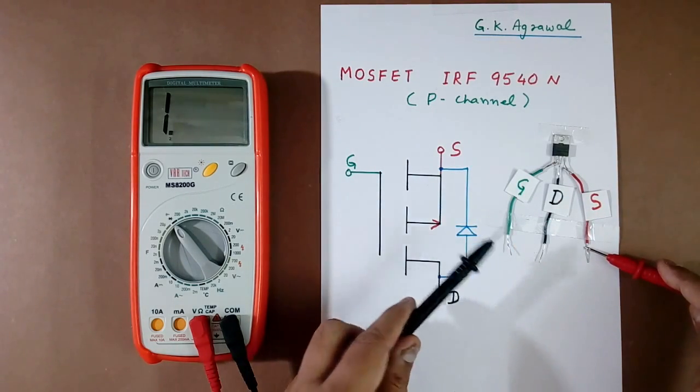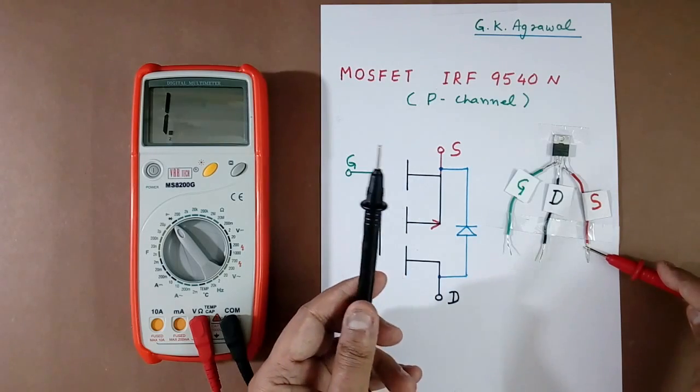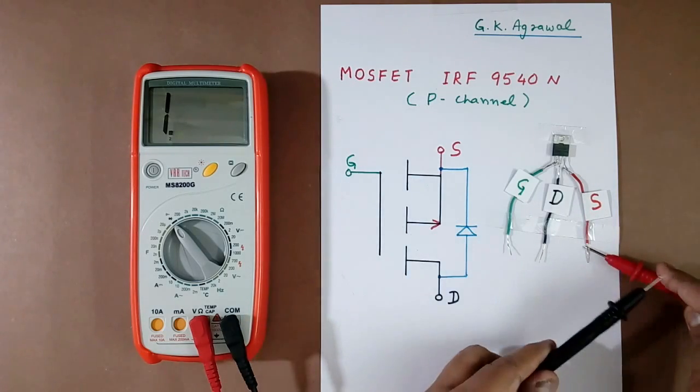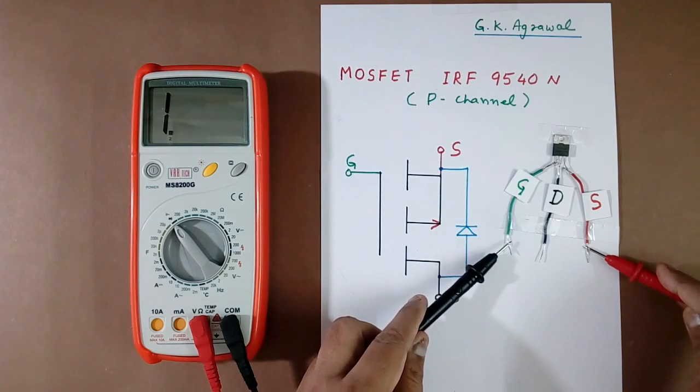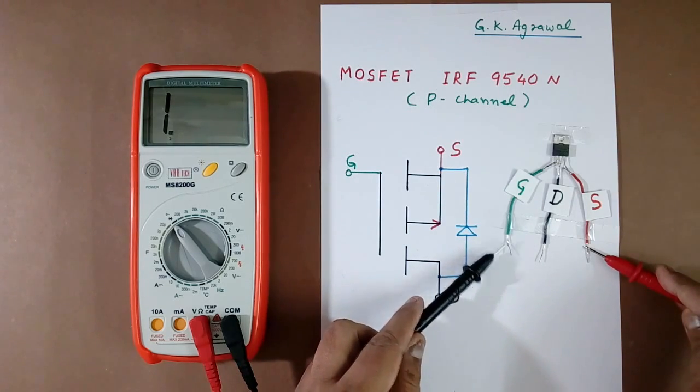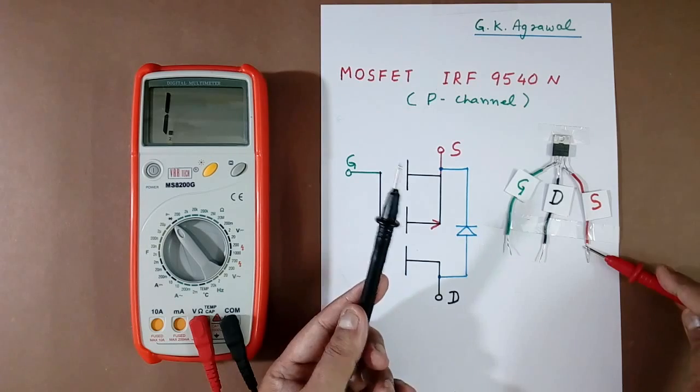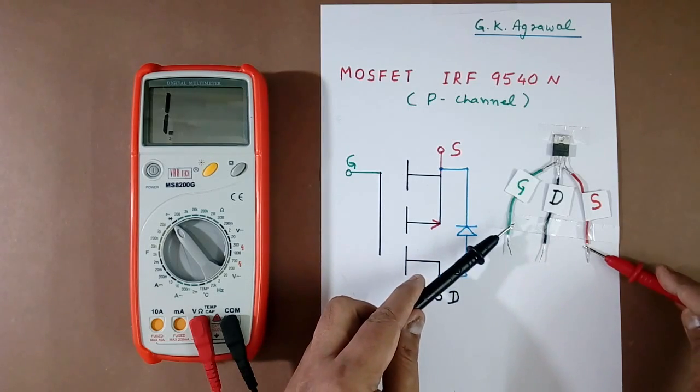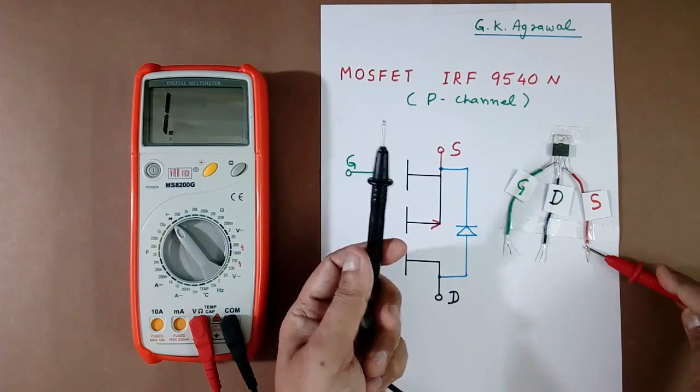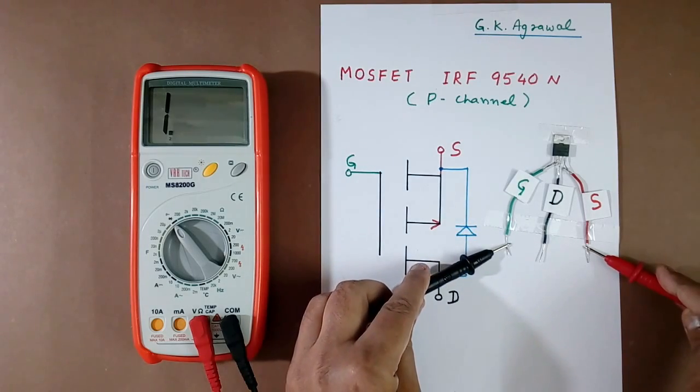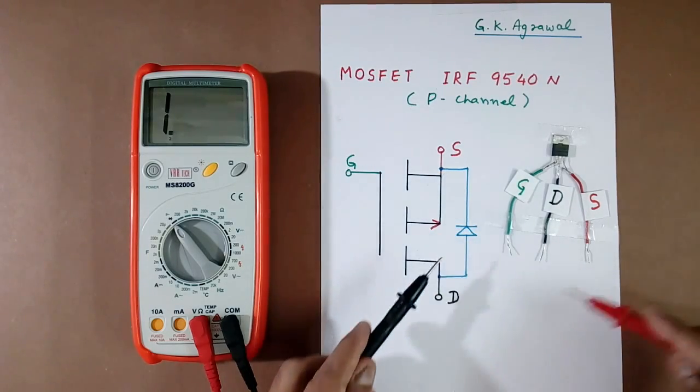Now at gate, this terminal minus and this plus always has some voltage. So we will give some voltage here for short time at gate. Gate has some stray capacitance. When I touch this black wire here, gate will charge and this MOSFET will become ON. So I will touch this with gate. So I have touched. Now this MOSFET has become ON.